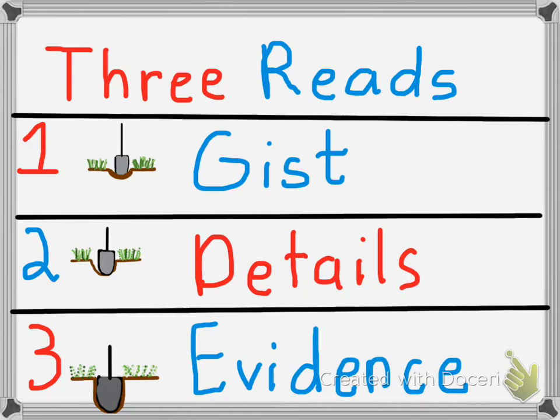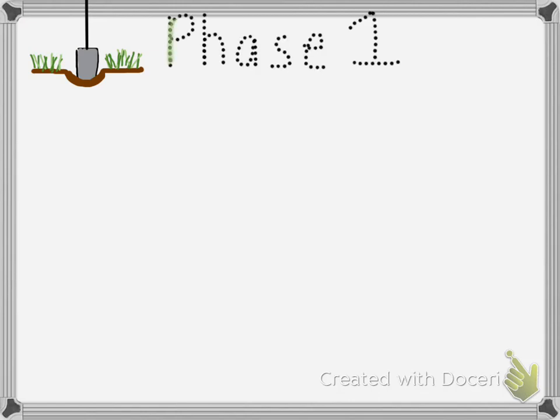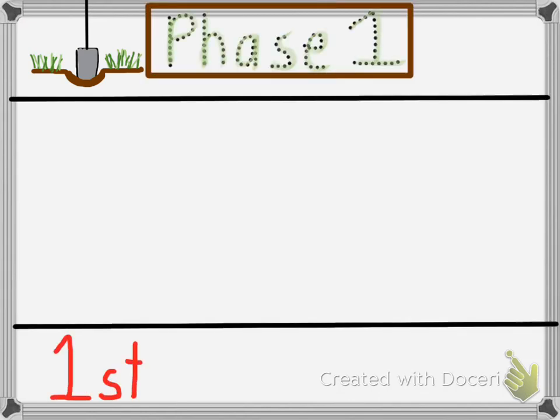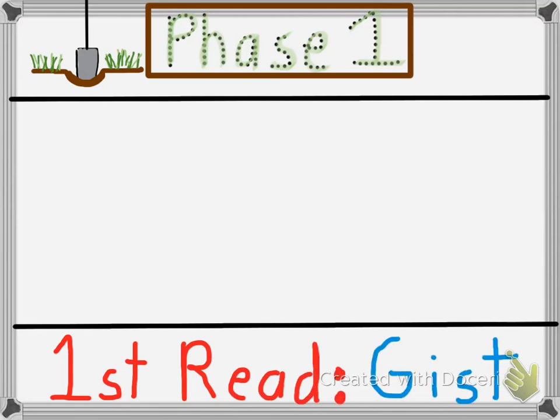We will now take a deeper look at what the phases are — phase one, phase two, and phase three. Remember, the first phase is just scratching the surface of the text. In the first phase, we will focus our first reading on getting the gist of the text, the big idea of the text.